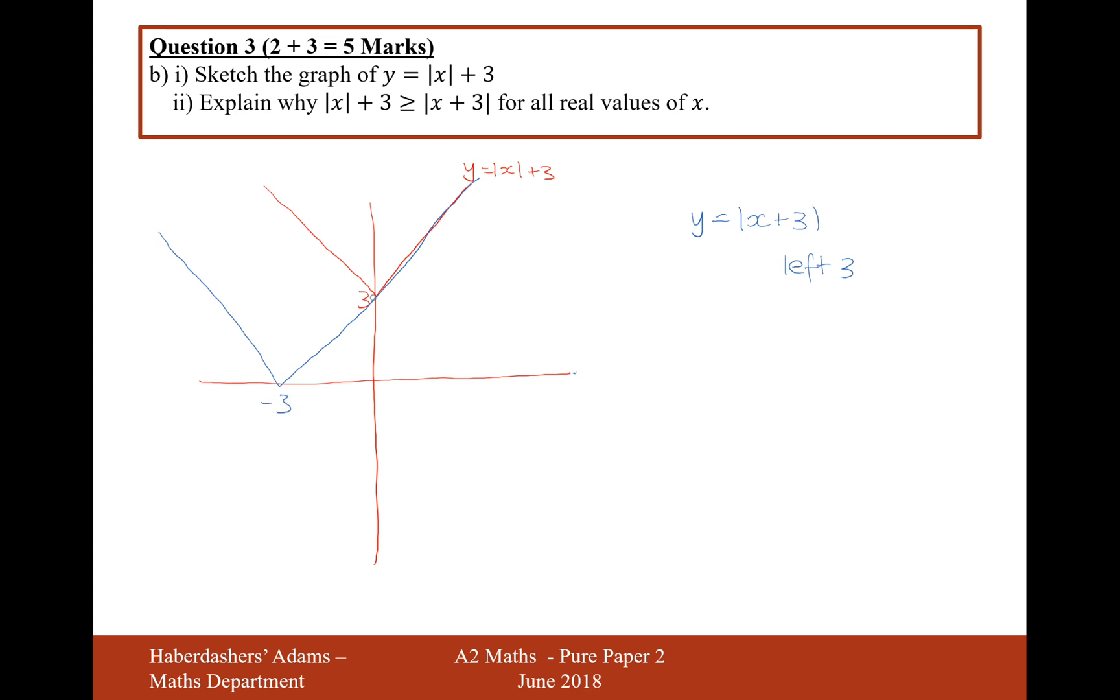And you can see by the graph that when X is less than 0, the modulus of X plus 3 is going to be greater than modulus of X plus 3. Because this is going to be a negative term, this is going to make that smaller. So, it's always going to be the left-hand side that's greater.